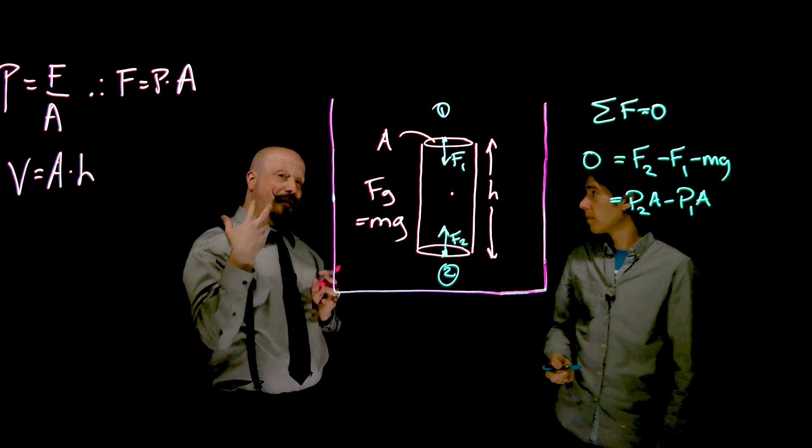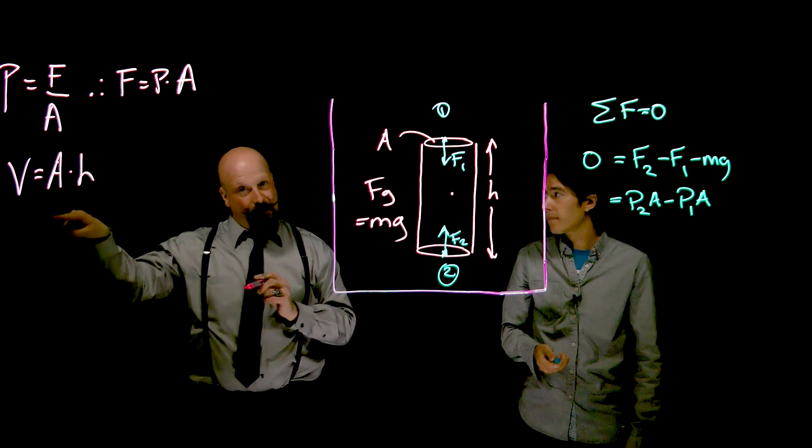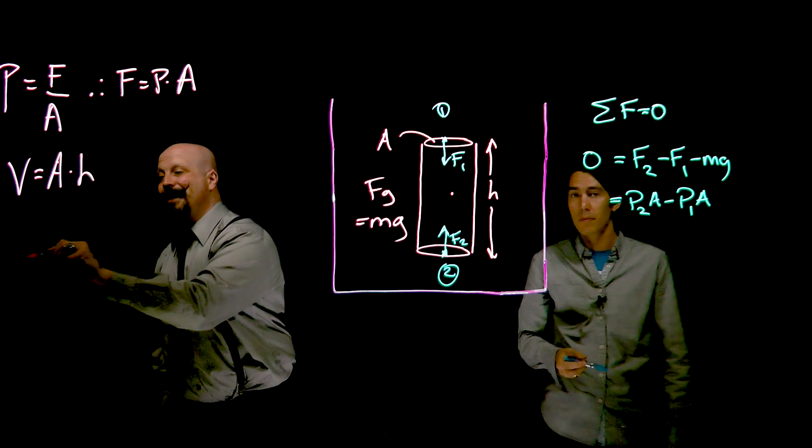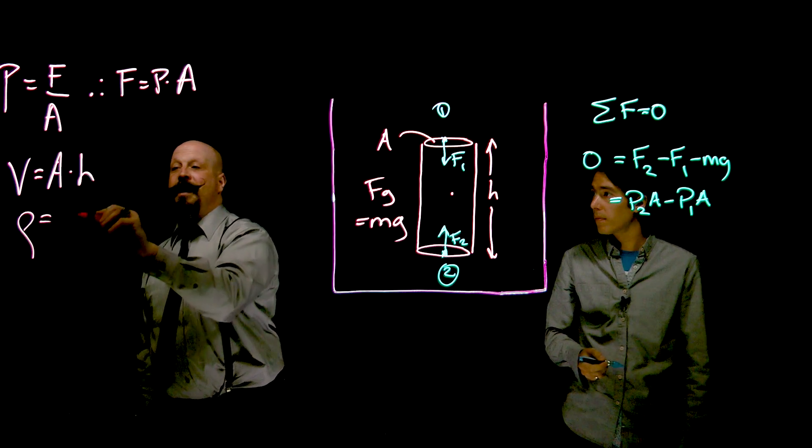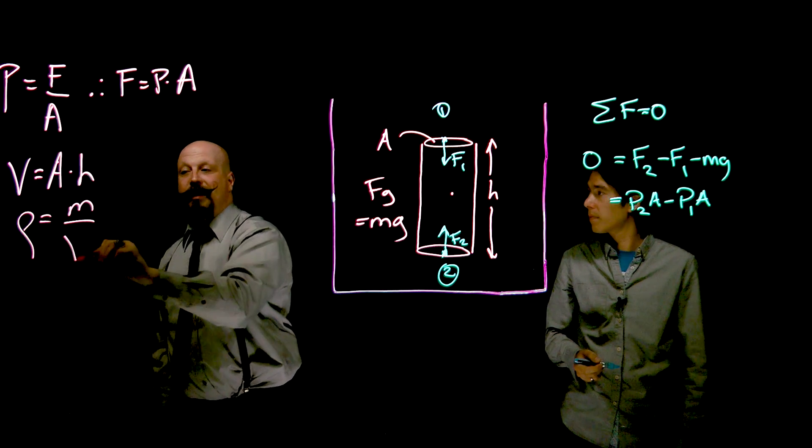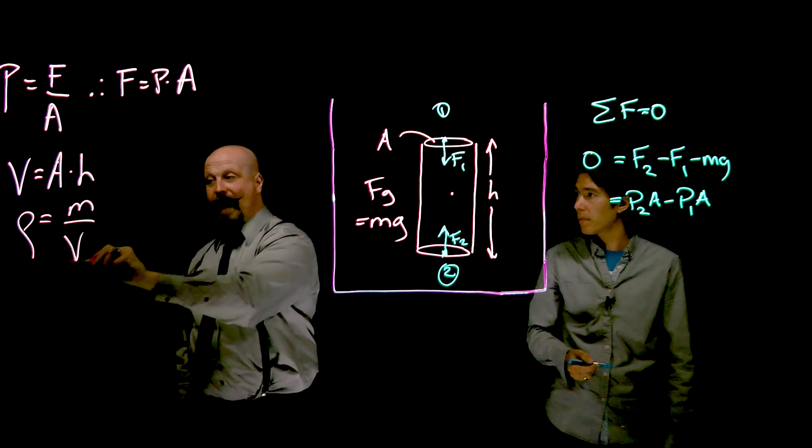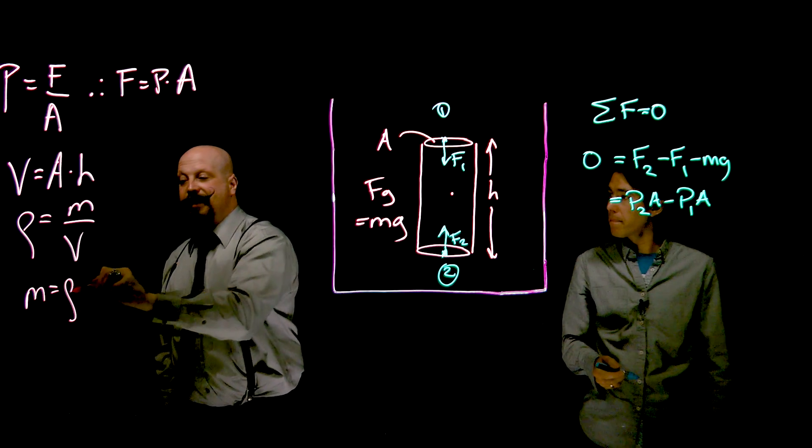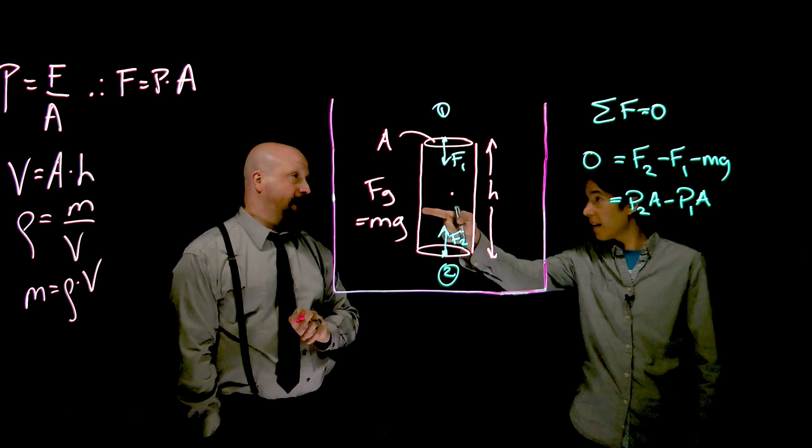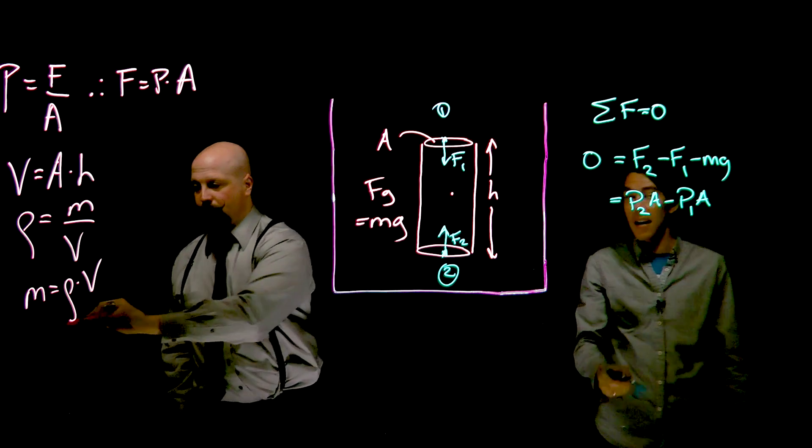So we know we have mass. We know we have multiplied by gravity. We have some kind of volume here. And we know that the density of that water is equal to the mass divided by the volume, or that the mass is equal to the density times the volume.